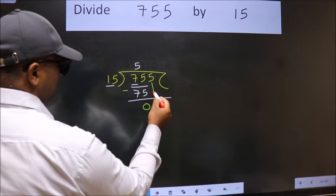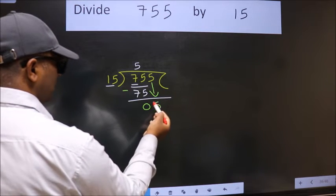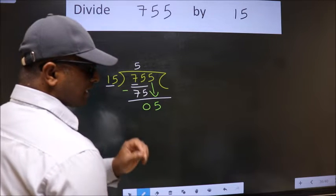After this, bring down the beside number. So 5 down. After this step, the mistake happens. And the mistake is this.